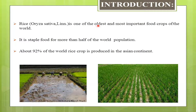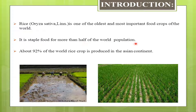Firstly we are going to discuss about introduction. Rice — its scientific name is Oryza sativa. It is one of the oldest and most important food crops of the world. It is staple food for more than half of the world population. About 92% of the world rice crop is produced in the Asian continent.